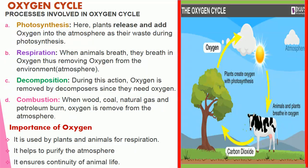D. Combustion, also known as burning — when wood, coal, natural gas, and petroleum products burn, oxygen is also removed from the atmosphere. Importance of oxygen: It is used by plants and animals for respiration, it helps to purify the atmosphere, and it ensures continuity of life. This is an image showing the oxygen circle. Oxygen is added into the atmosphere by photosynthesis in plants and is removed from the atmosphere by respiration.